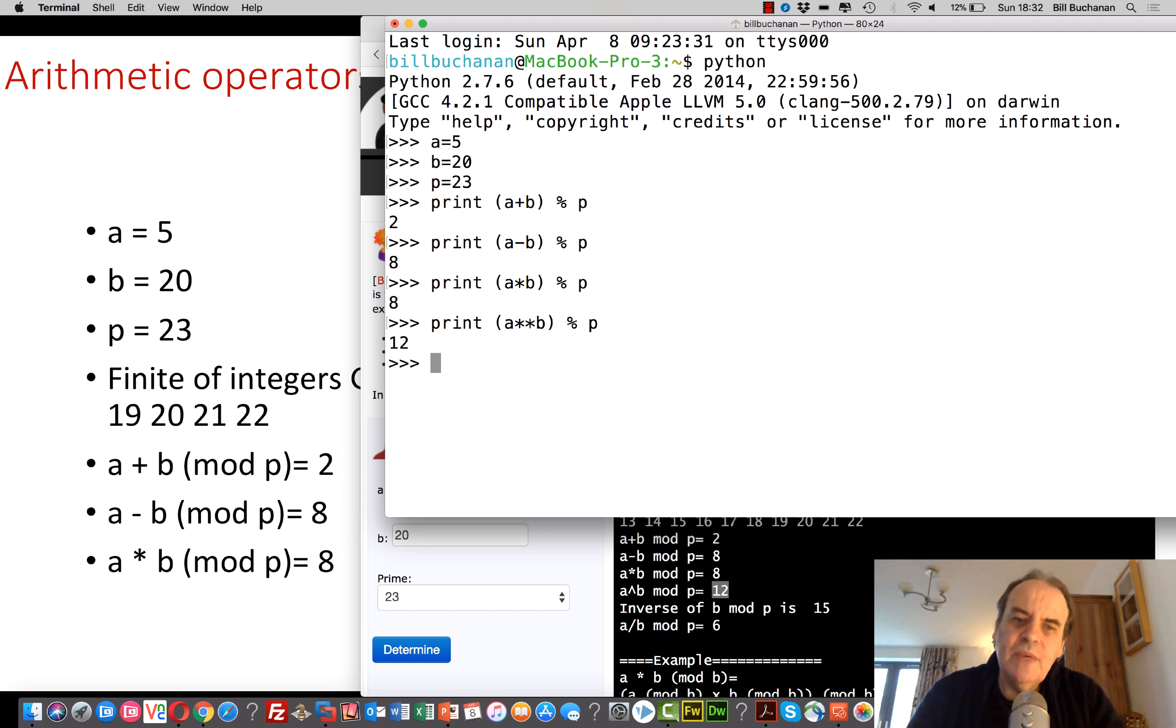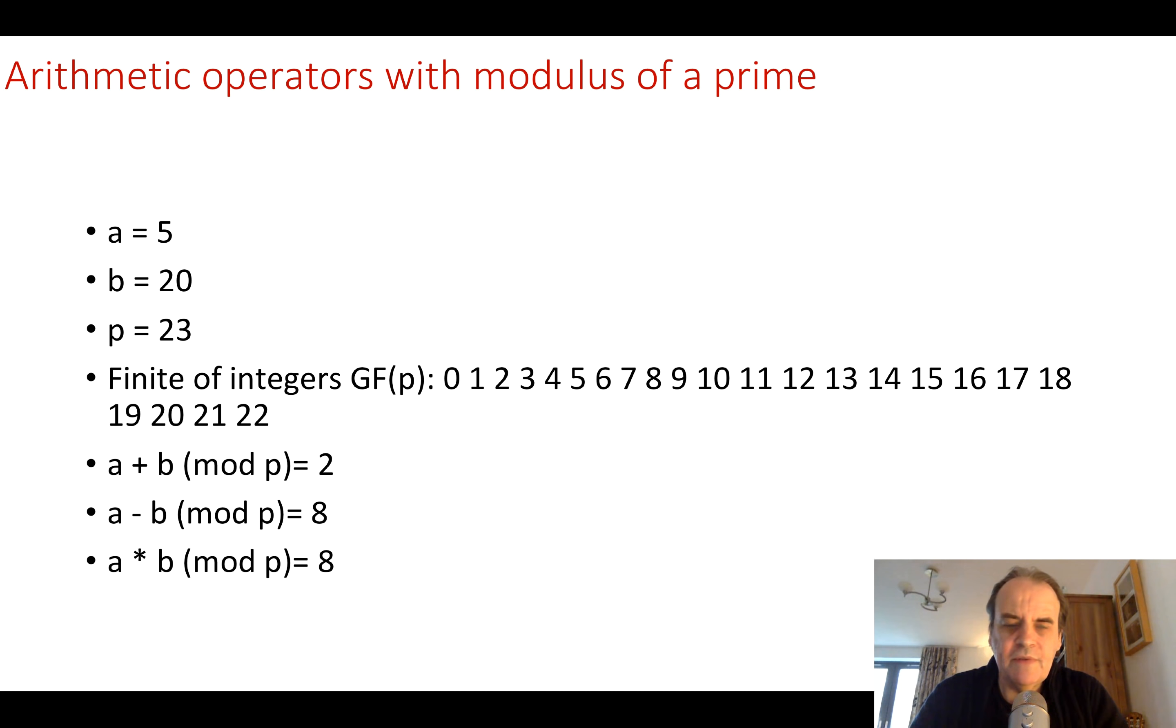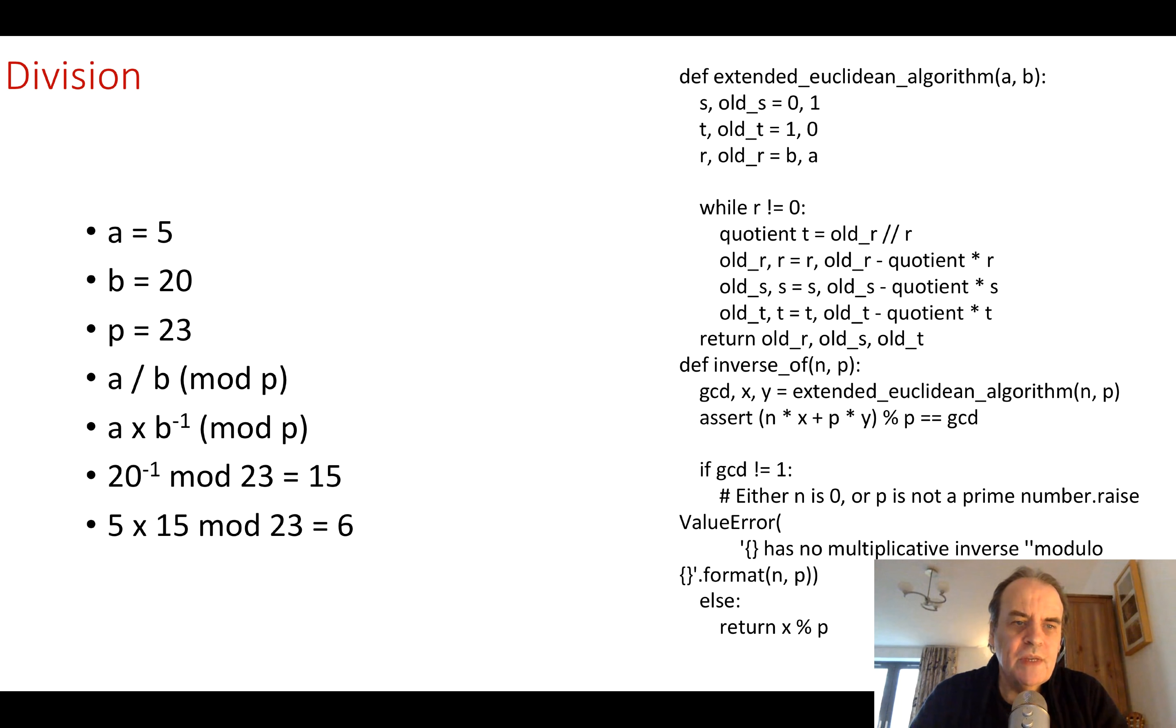The one difference is when we have a divide, we don't use the same type of arithmetic operators that we would normally use. So what we're trying to find is the inverse, the value inverse mod p, that will give us the equivalent value. So we end up with b, a times, a divided by b is a times b to the minus 1 mod p. For this we use the extended Euclidean algorithm to be able to find the inverse.